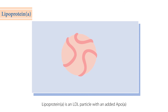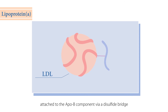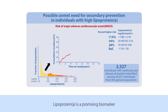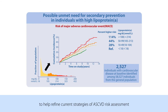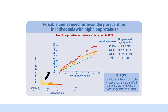Lipoprotein(a) is an LDL particle with an added ApoA attached to the ApoB component via a disulfide bridge. Lipoprotein(a) is a promising biomarker to help refine current strategies of ASCVD risk assessment.